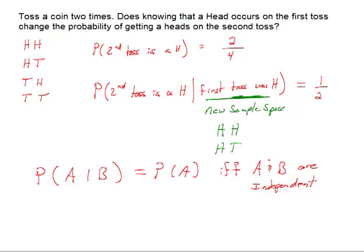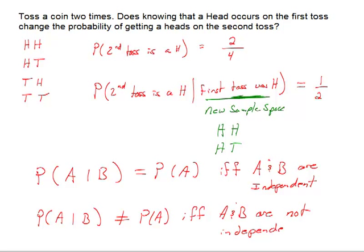If the events happen to be dependent, what would happen is that when you look at the statement, you'll find that it will be false. That when you compute the probability of A given B, if it's not the same as the probability of A, then we're guaranteed that they are not independent of each other. So if this is true, that's only if A and B are not independent.